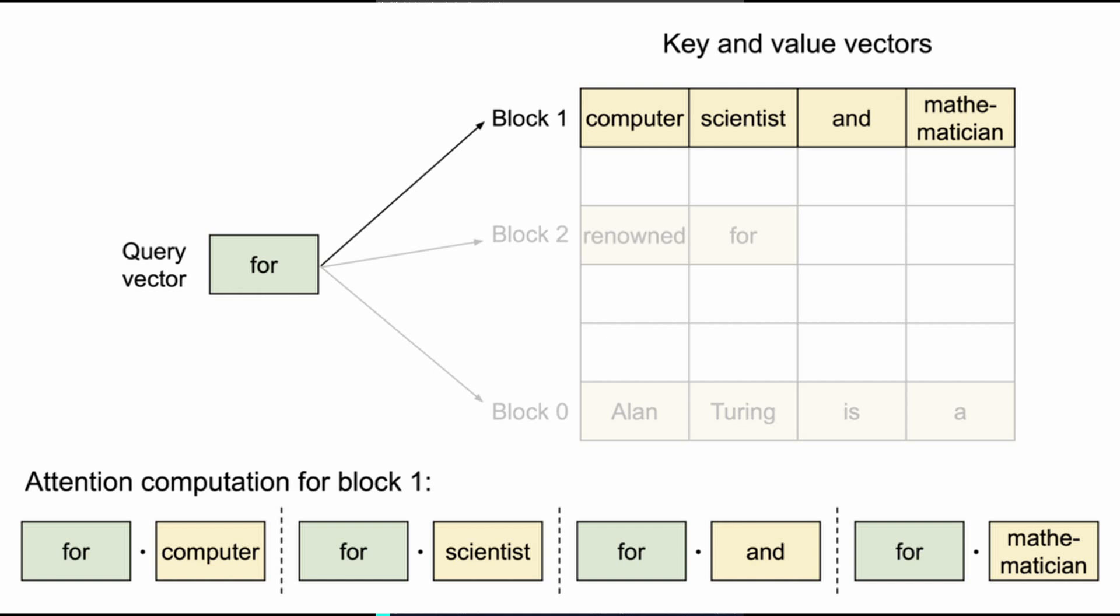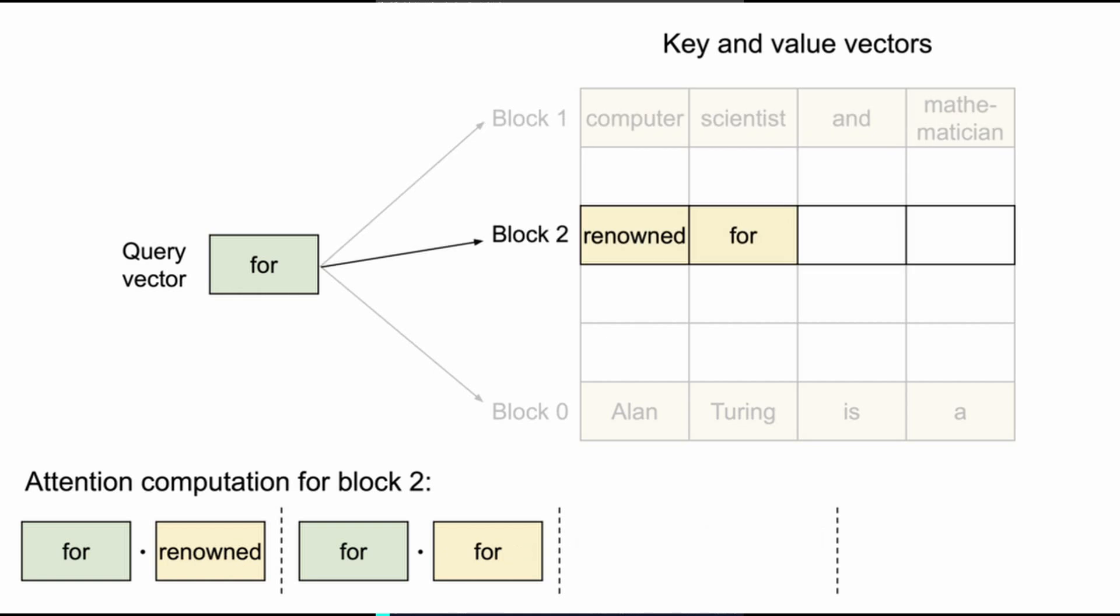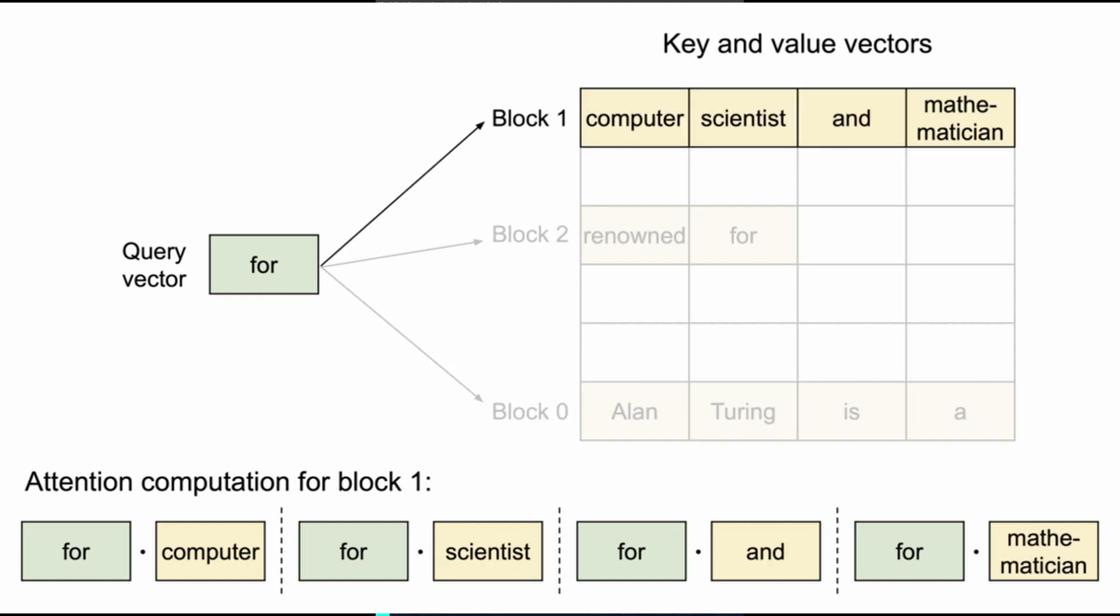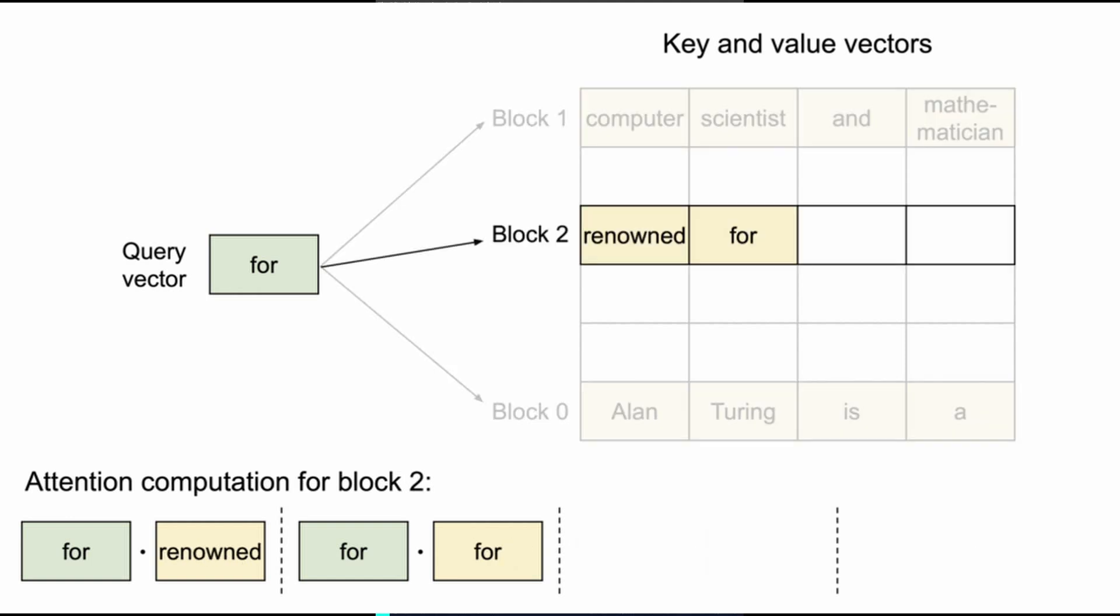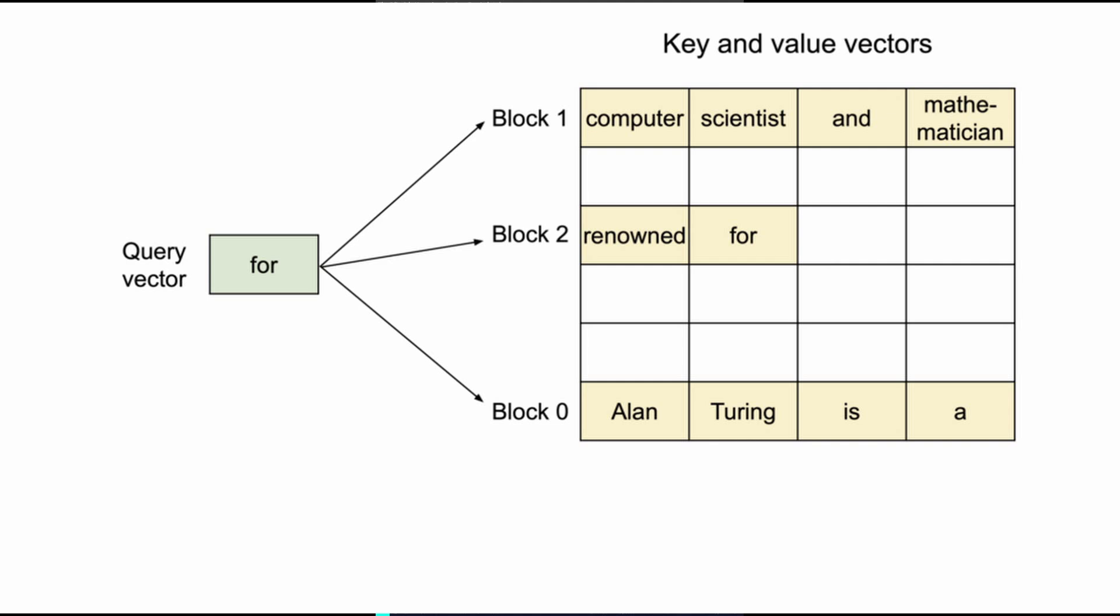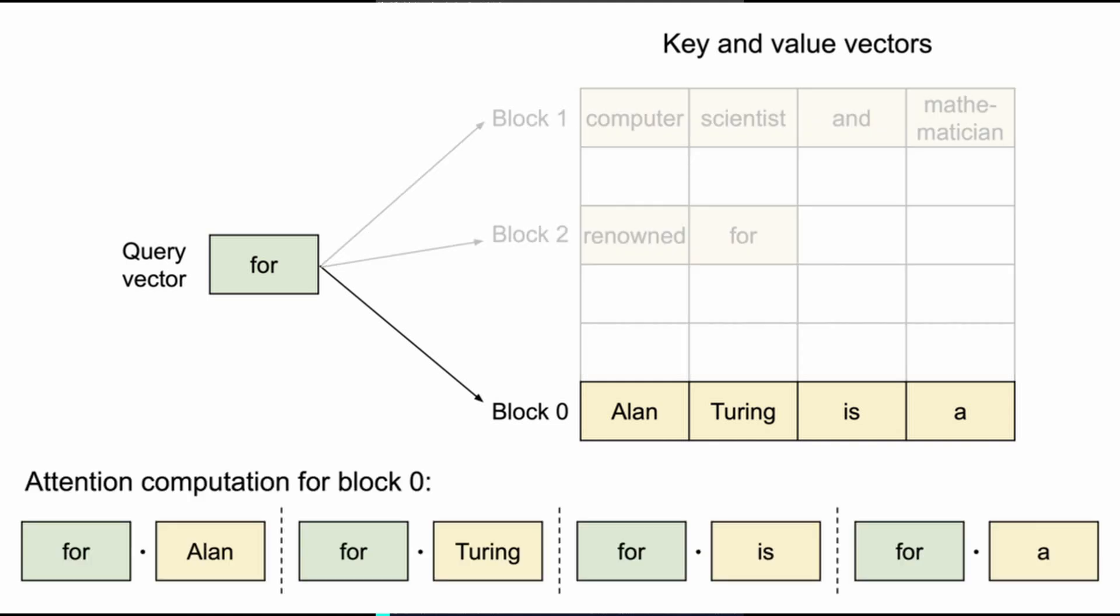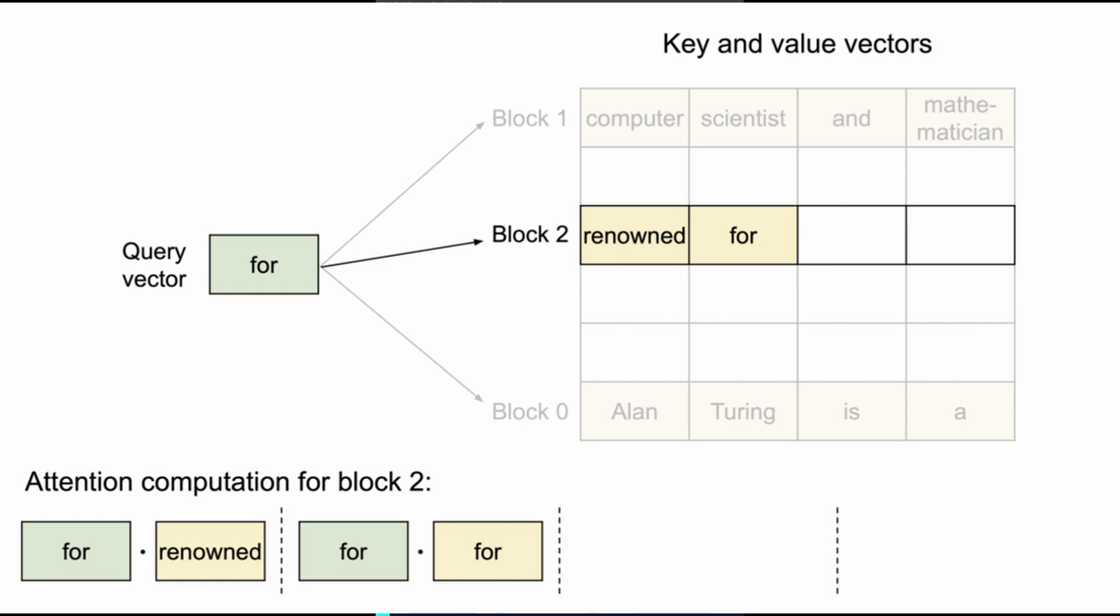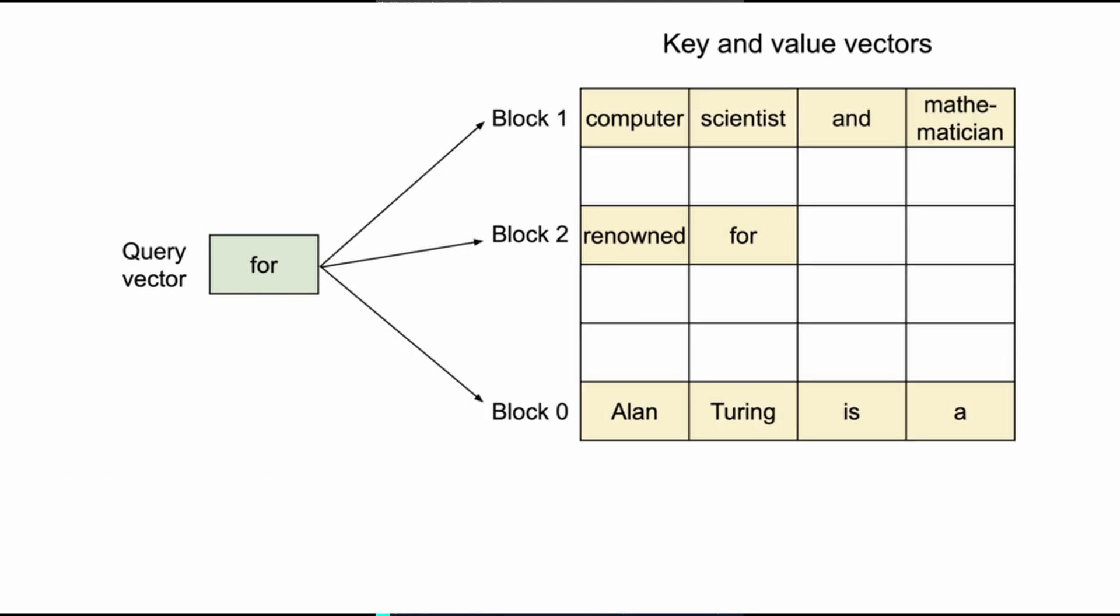If two requests use the same long prefix, such as k-shot examples for multiple parallel translation tasks, the KV cache blocks for that prefix can be shared by multiple requests, simply by placing the index of that block in the appropriate part for each request's list of block indices.